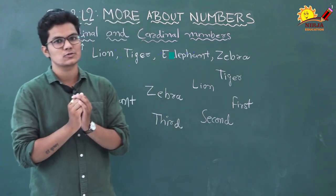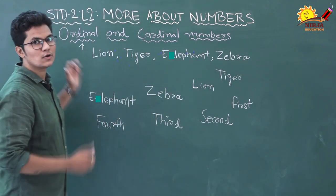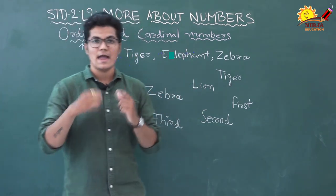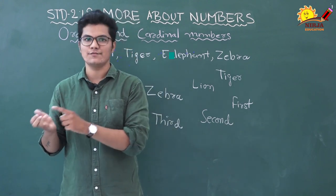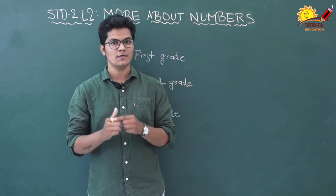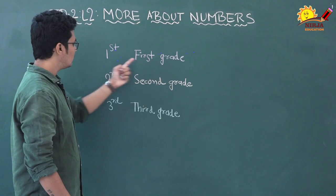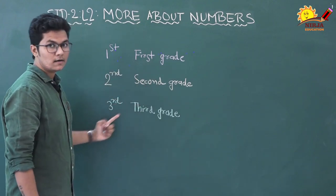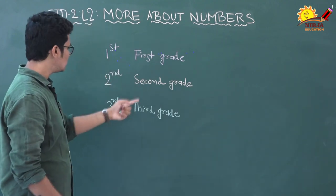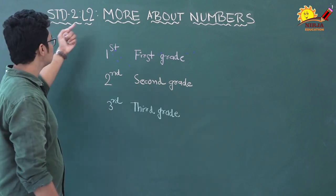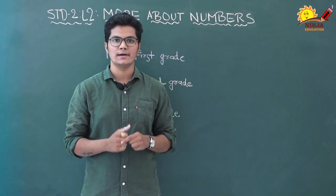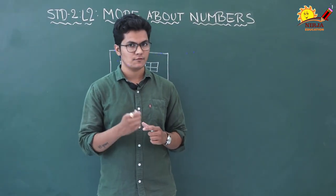When we tell the position of an object in an ordered collection, we say first, second, third, fourth, fifth, sixth and so on. These numbers are known as ordinal numbers. We use ordinal numbers for grade levels in school — for example, first grade, second grade, third grade, or first standard, second standard, third standard.